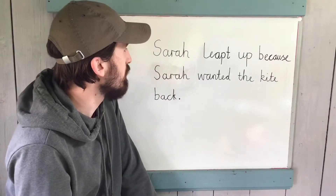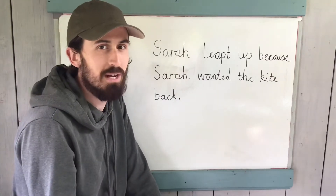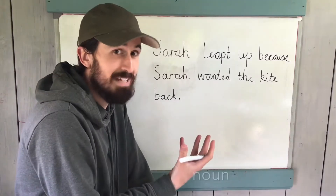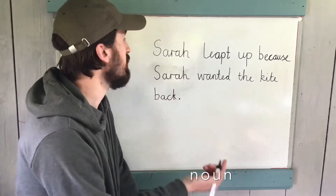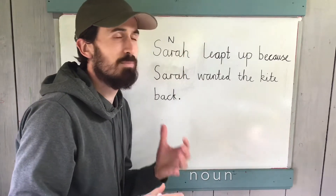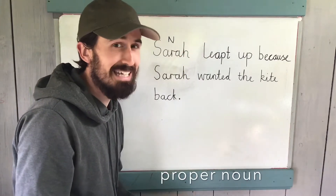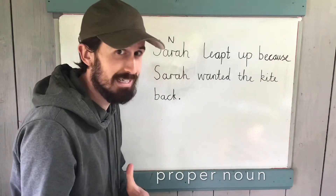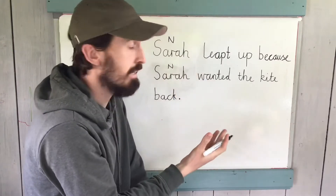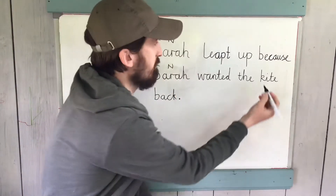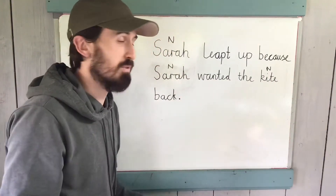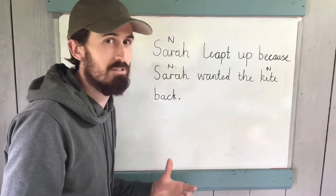We've got: Sarah leapt up because Sarah wanted the kite back. The first thing I want us to identify is the actual noun in the sentence. There are a couple here. Sarah, for instance, is a noun — specifically a proper noun, because that's the name of a person or a place. We can also say kite is a noun, but we're going to focus mainly on the proper noun Sarah here.